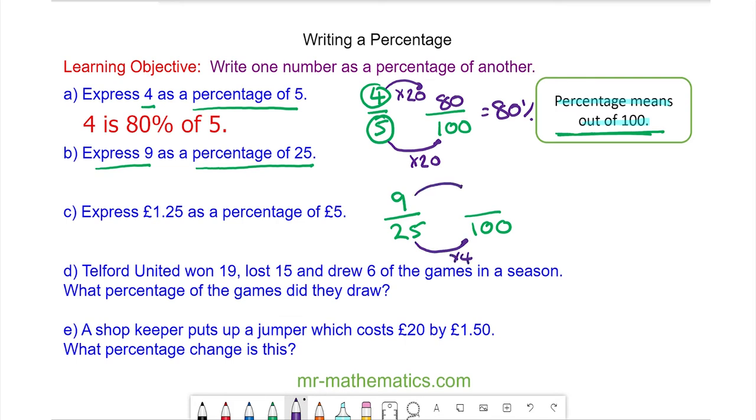So we're going to write it over 100, and 25 times 4 makes 100. We do the same to the numerator to keep it equivalent, and we have 36 over 100, which is 36%. So 9 is 36% of 25.